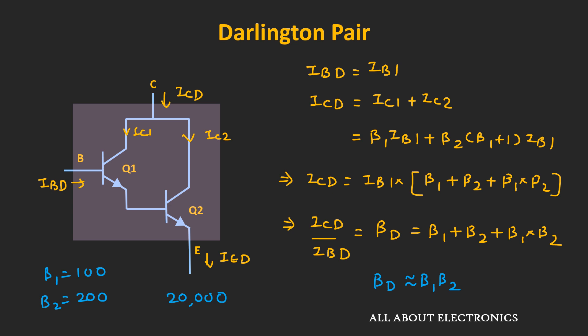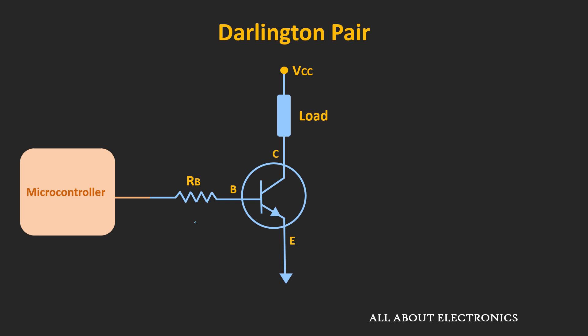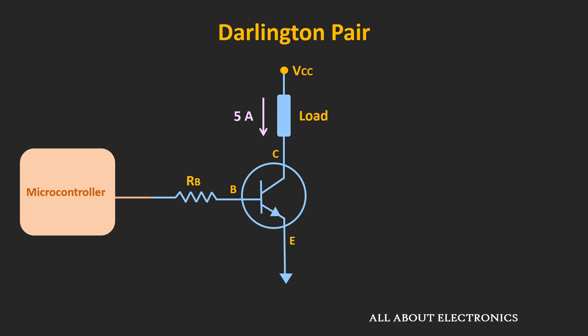Now let's understand how this high current gain is very useful in some applications. One of the most common applications of the Darlington pair is to use it as a switch. Let's understand its usefulness by understanding how it can be used as a switch. Let's say using a microcontroller, we just want to turn on and off a particular lamp, and for that we are using a BJT as a switch. Here, the required current through the load is 5A, while the β of the transistor is equal to 100, and the maximum current which can be delivered by the microcontroller is equal to 20mA.